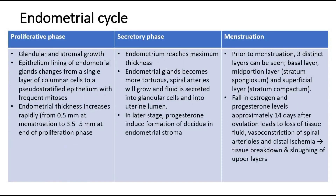Next, let's look at the endometrial cycle, which is divided into the proliferative phase, secretory phase, and menstruation phase. During the proliferative phase, there is glandular and stromal growth. The epithelial lining of the endometrial glands will change from a single layer of columnar cells to a pseudostratified epithelium, and the endometrial thickness will increase rapidly, becoming very thick at the end of the proliferative phase.